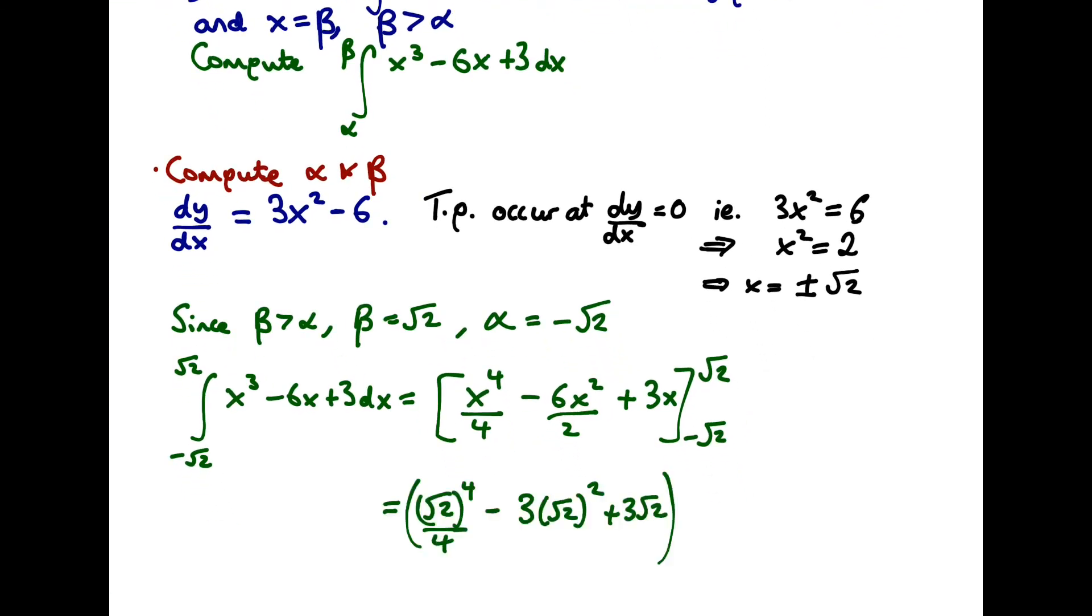Now, plugging in these limits, putting the root 2 limit in, we get root 2 to the 4 divided by 4 minus 3 times root 2 squared plus 3 root 2. And doing the negative limit, we get something similar.